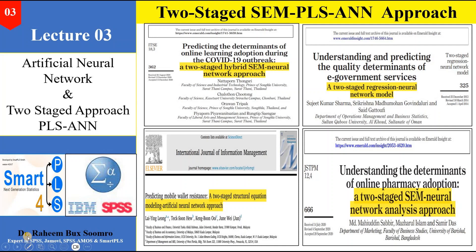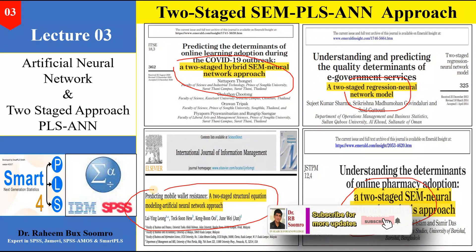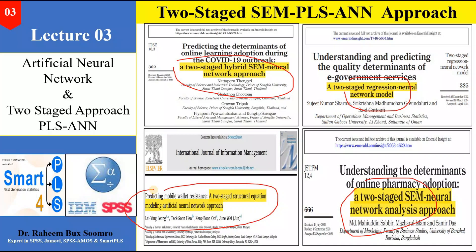You can see here several research papers involving the two-stage approach. It is a wonderful and nowadays very popular technique. Most researchers are adopting the two-stage approach — first applying structural equation modeling on their data, then applying the ANN approach to determine the level of importance of predictors. The basic job of ANN is to identify which independent variable is most important among all independent variables.